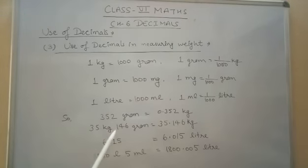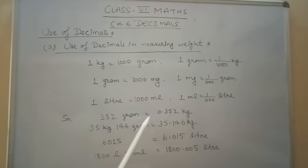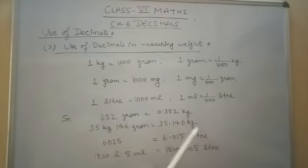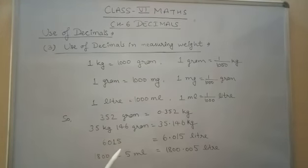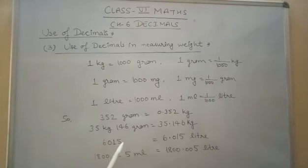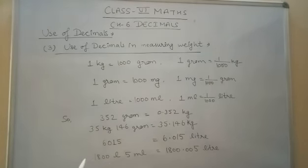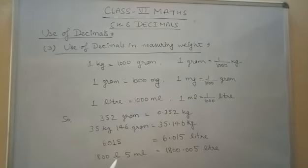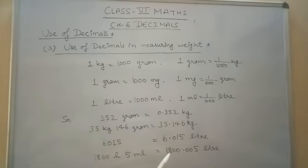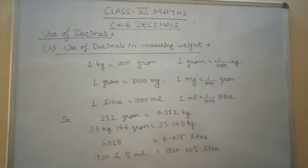35 kg and 146 gram, we can write 35.146 kilogram. 6015 ml is converted into 6.015 liter. 1,800 liter and 5 ml, that is 1,800.005 liter.